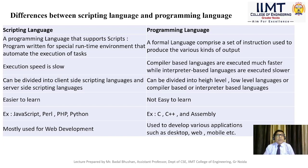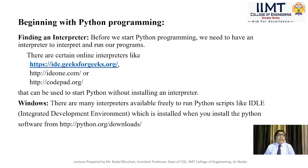Python as a scripting language is used in web development, whereas programming languages are used to develop various applications such as desktop, web, mobile, etc. Now, beginning with Python programming — to find the interpreter: before we start Python programming, we need the interpreter to interpret and run the program.